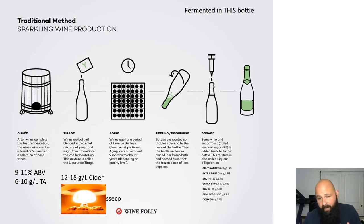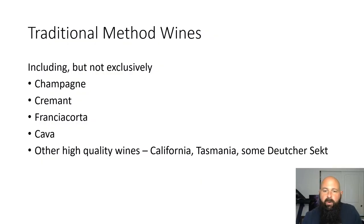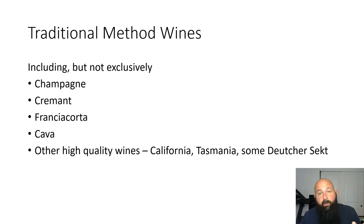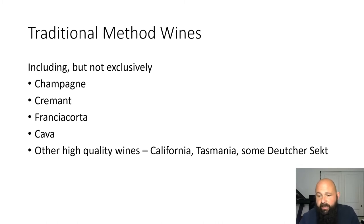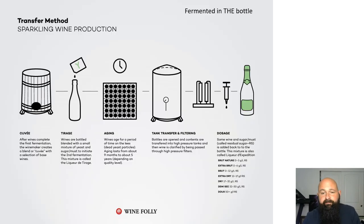Sparkling wine is a long process: the cuvée takes months, tirage and aging can take years, and then you riddle, disgorge, and sell. It requires a whole different set of equipment and production process. Traditional method wines include — but aren't exclusive to — Champagne, Crémant, Franciacorta, and Cava. Washington's Domaine Ste. Michelle has been making traditional method sparkling for a long time, as has Schramsberg in California. Tasmania makes some of the world's best sparkling wine, and Sekt is Germany's version.